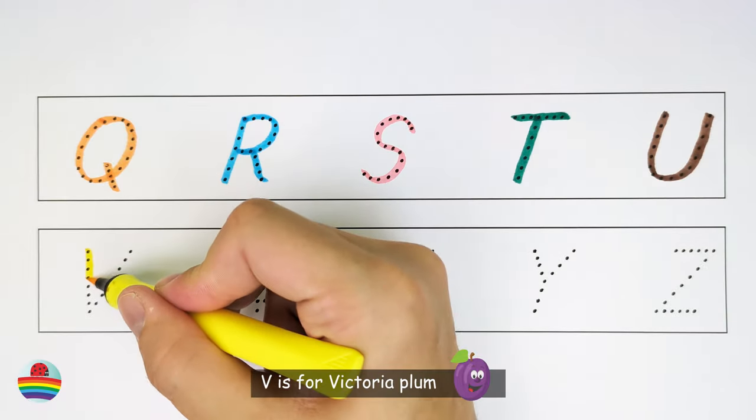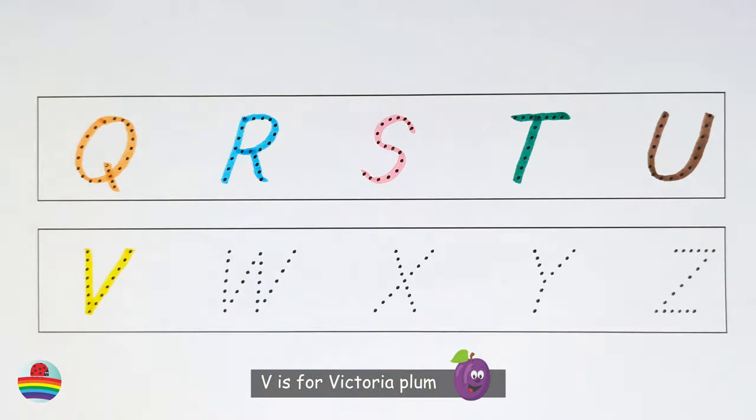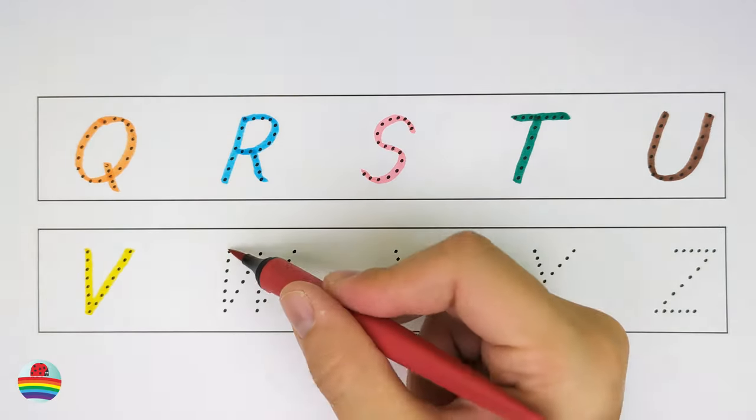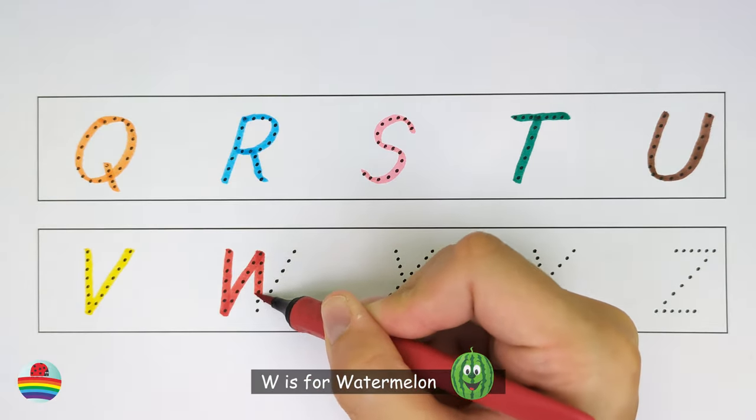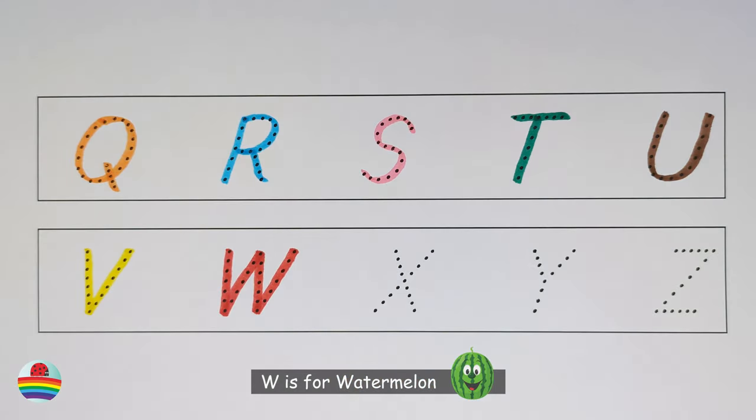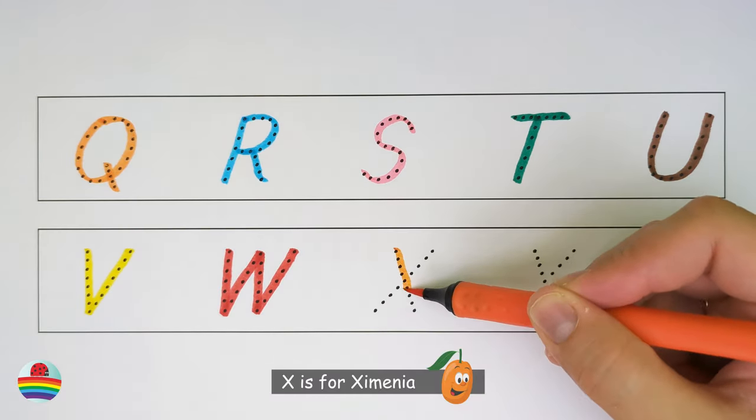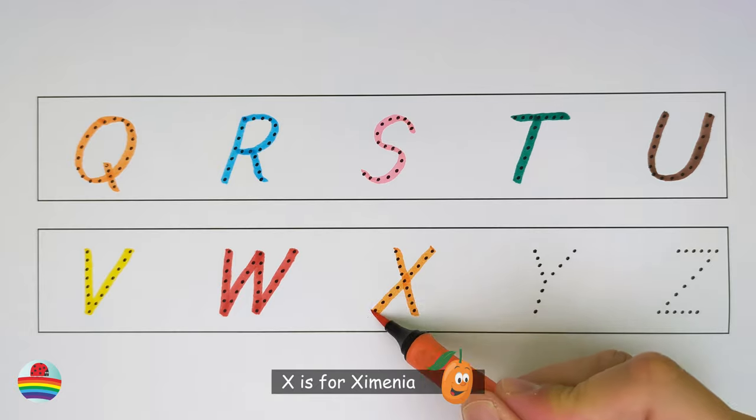V. V is for victoria plum. W. W is for watermelon. X. X is for zymenia.